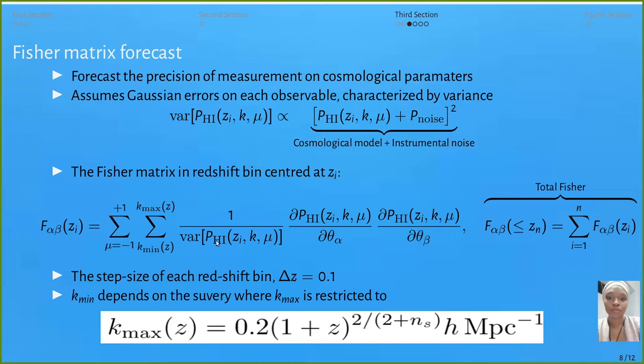The partial H1 power spectrum is the derivative with respect to the parameters we are considering. K_min depends on the surveys, while K_max we restricted to 0.2(1+z)^(2/(2+n_s)) h Mpc^-1. Because we want the total Fisher of redshift bins, we get accumulative constraints from this Fisher.